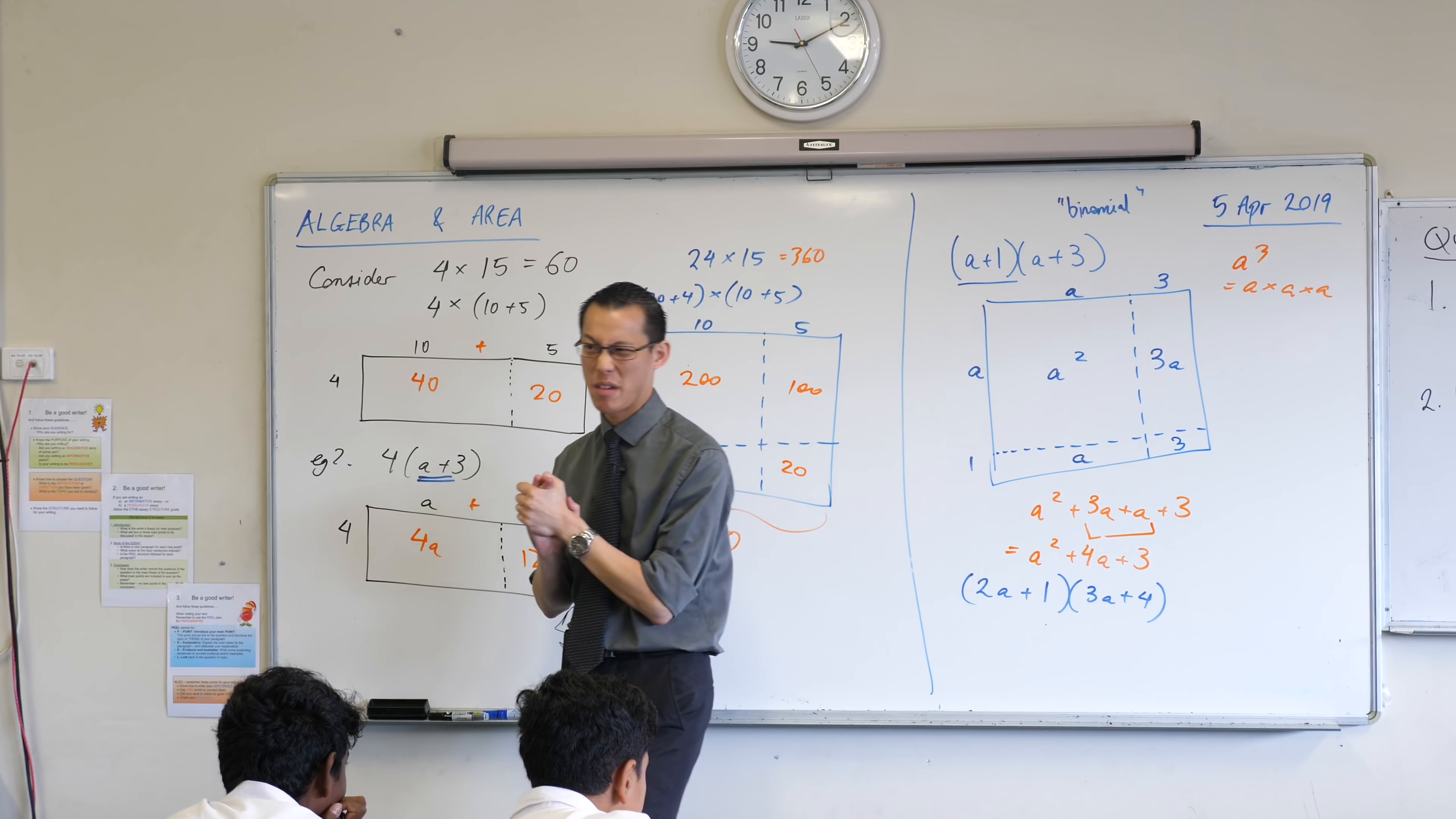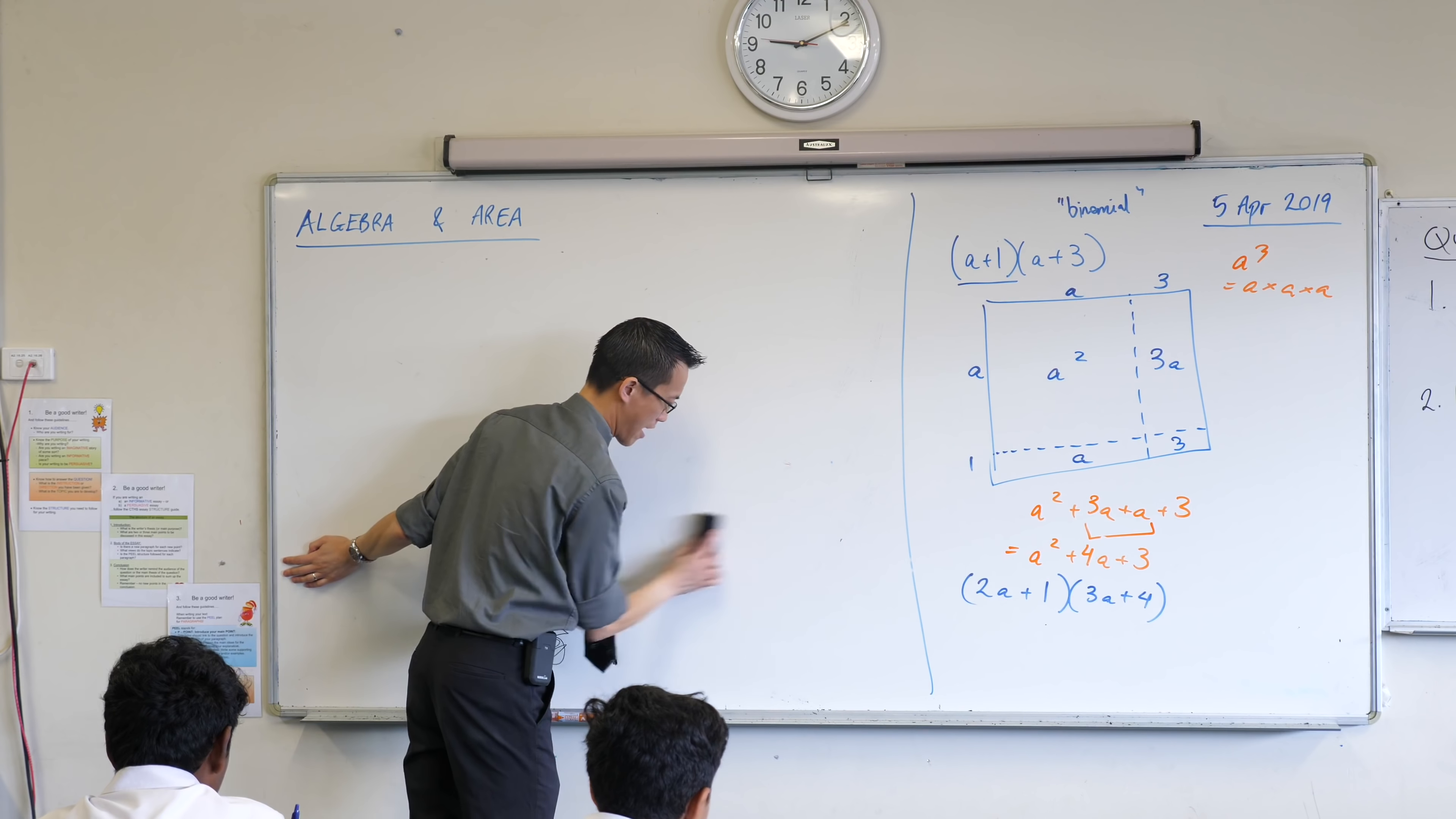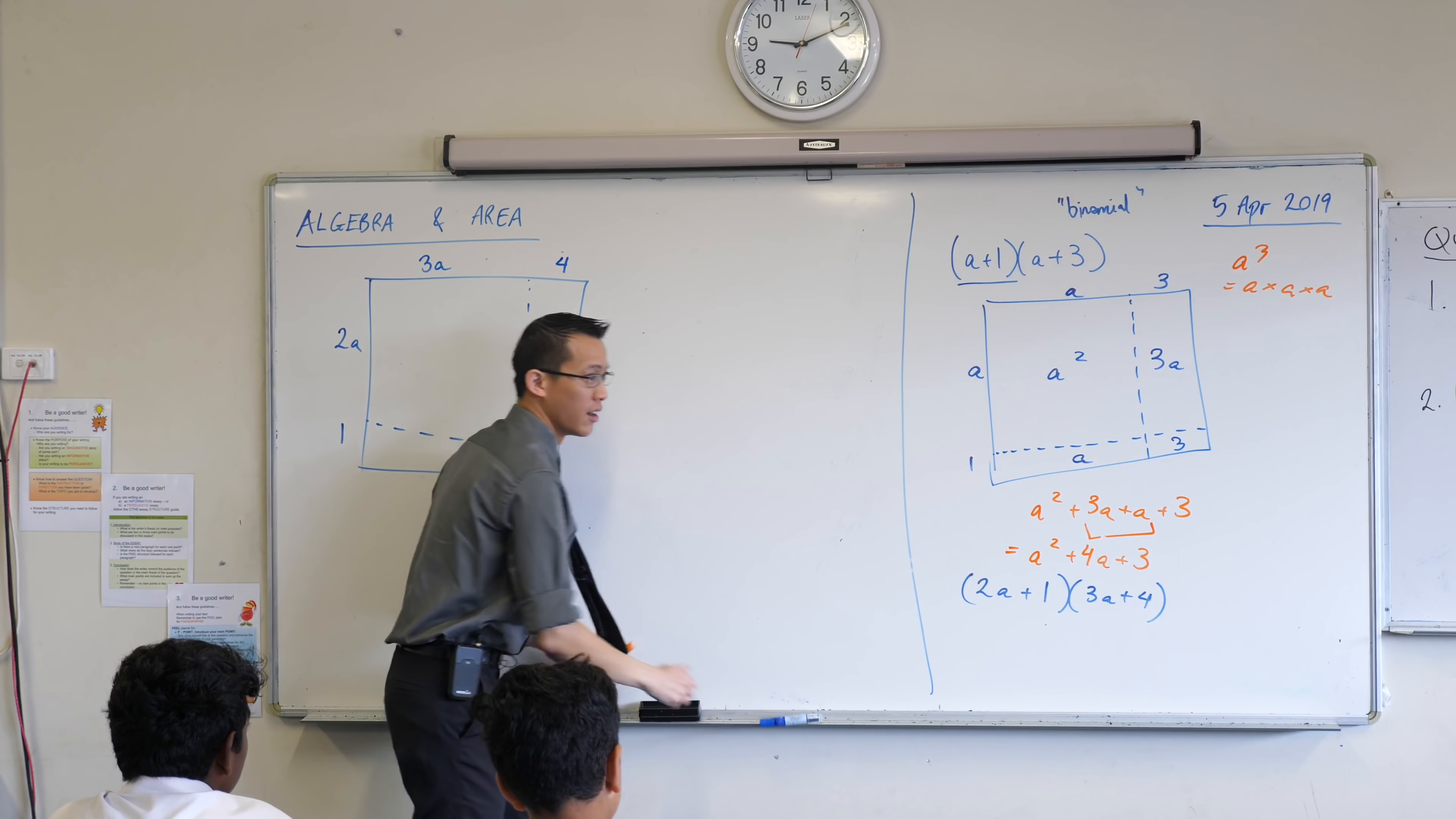I'm going to give you a minute to try and draw up that rectangle. Think about what that vertical length will be, what the horizontal length will be, and then we'll have a look at the solution together. Give me about 30 seconds. How are we? It's time. You get all of the time it takes me to rub this off and then write up the answer, and then we've all got to pack up.